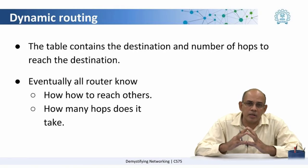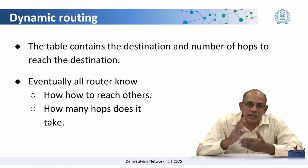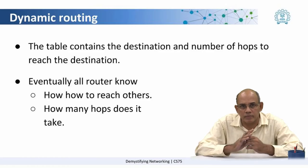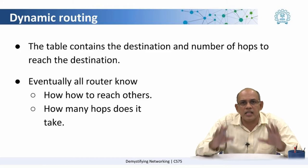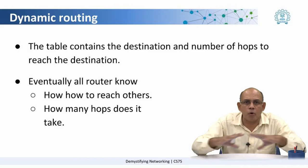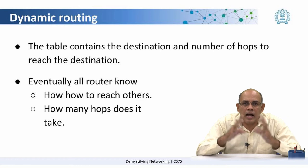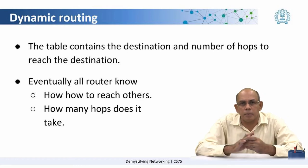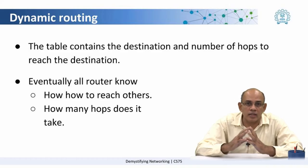What is the information contained in the table? The information is basically the destination and the number of hops to reach the destination. Using this information, eventually what happens is that as these routing tables are exchanged among routers in the internet and it progresses through the network, all the routers have a mechanism of determining how to reach any other point in the network, as well as how many hops that takes.